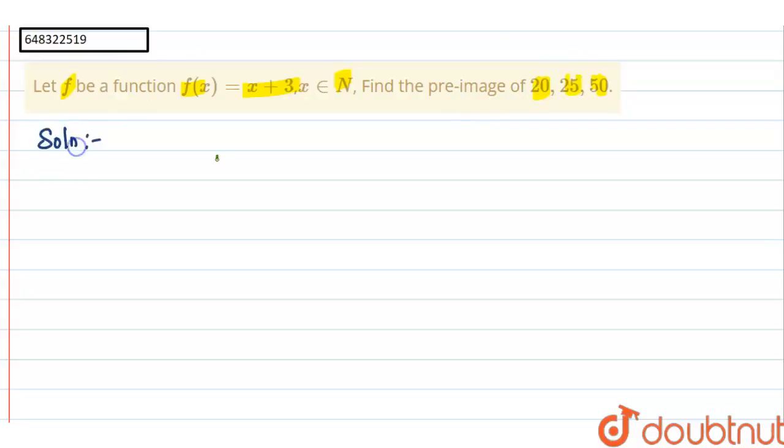I am going to solve this. A function is given in the question: f(x) = x + 3, where x belongs to N. Then you have to find pre-image of 20, 25, 50.